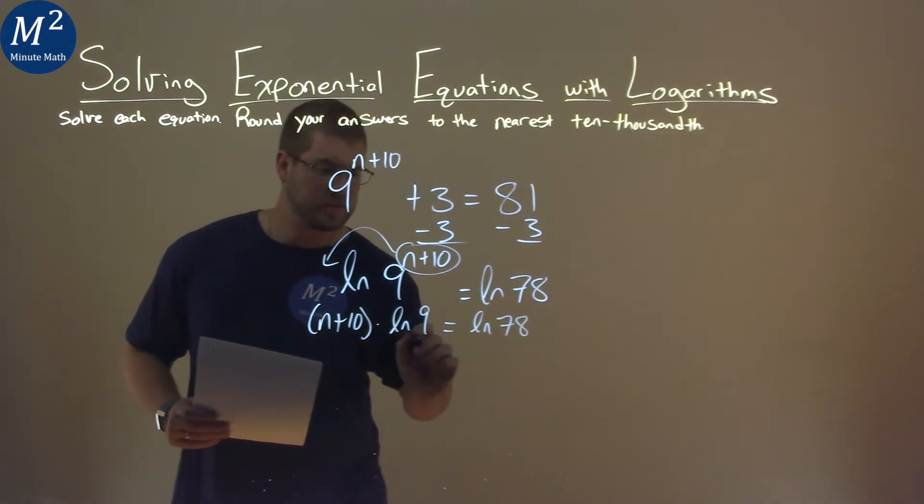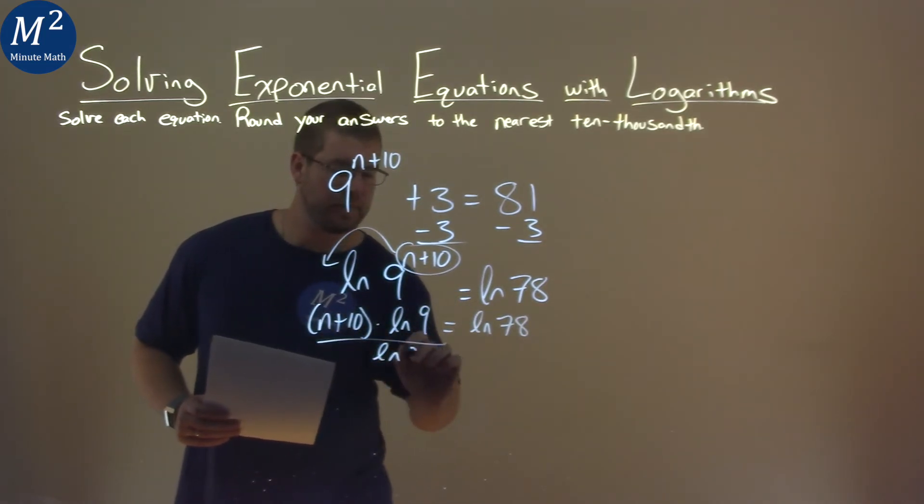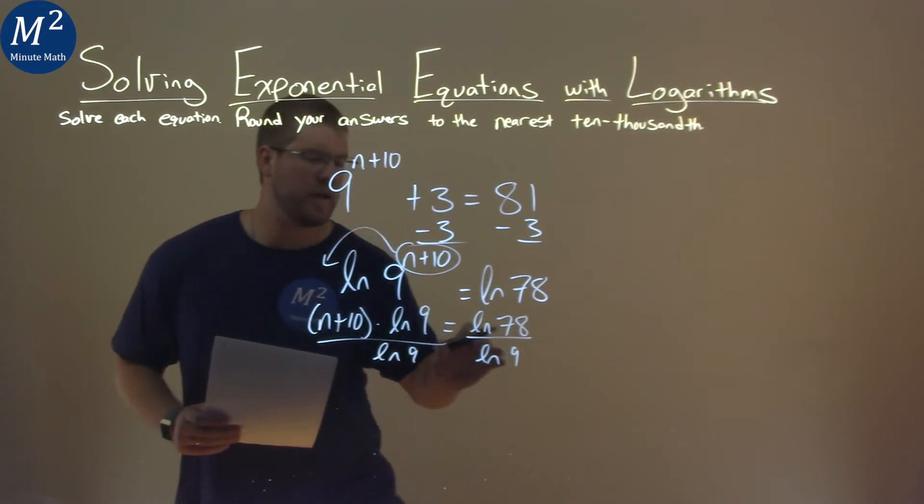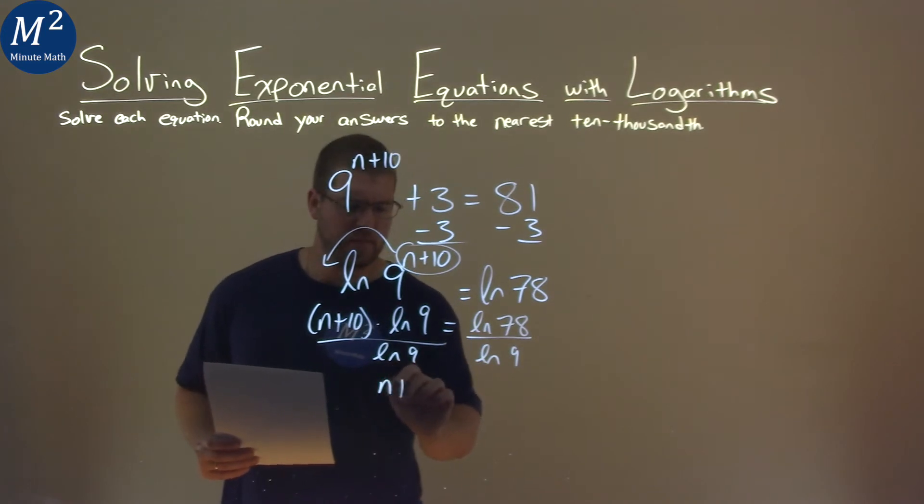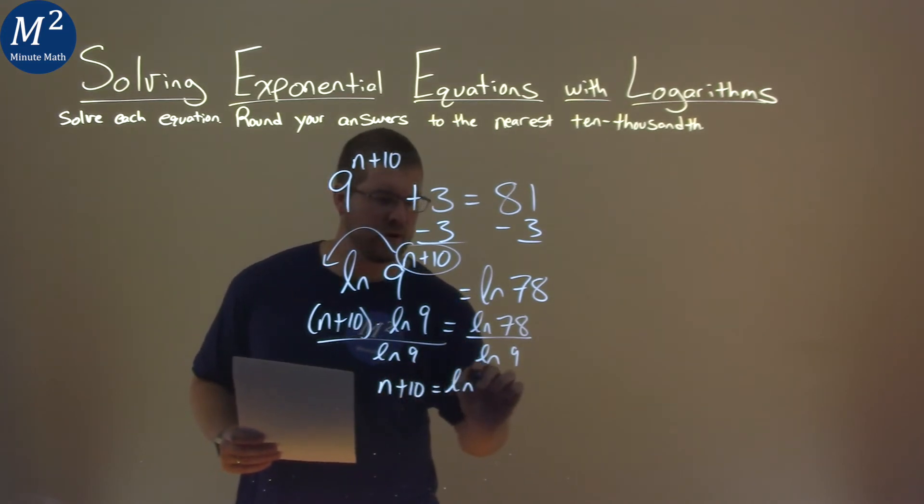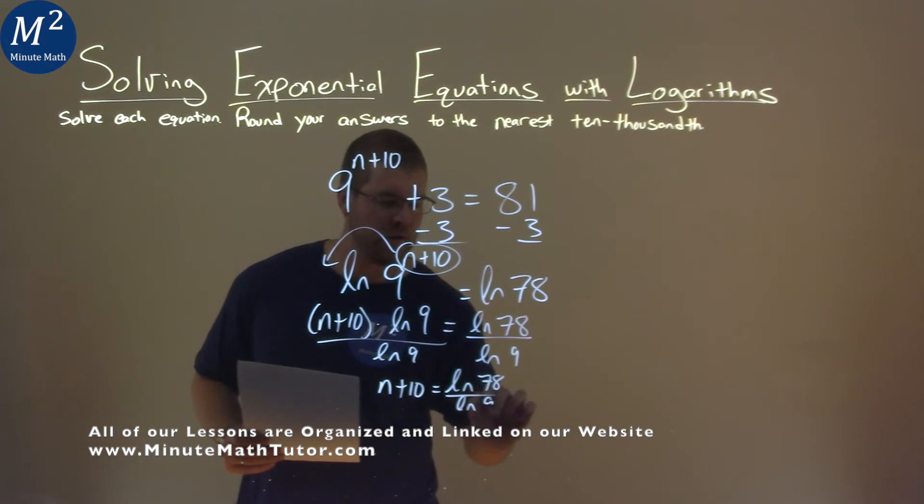I can divide both sides by natural log of 9. And I'm actually going to leave that on the right-hand side there. So we have n plus 10 equals natural log of 78 over natural log of 9.